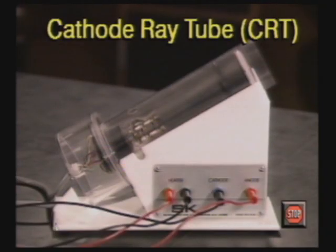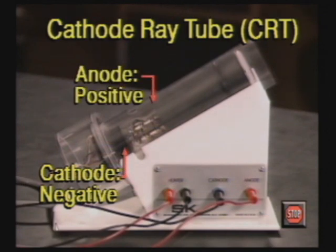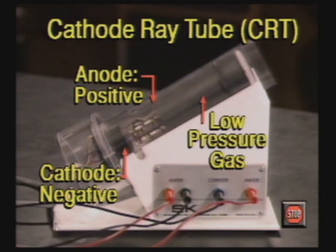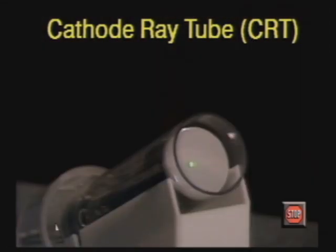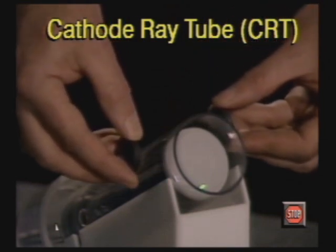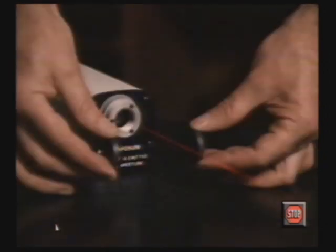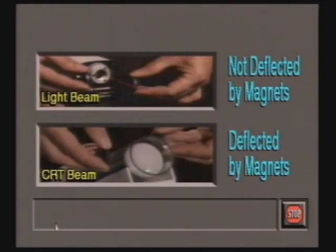Most of the air has been removed from this tube. The negative electrode is called a cathode and the positive electrode is called an anode. When an electric current is applied, the low-pressure gas conducts electricity, producing a glow. This glow was thought to be a form of electromagnetic radiation, like light. But when the tube was positioned in a magnetic field, something strange happened — the beam was deflected. Light is not affected by magnetic fields, but moving charged particles can be deflected. What can you conclude about the nature of the beam?